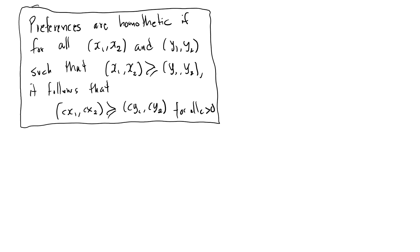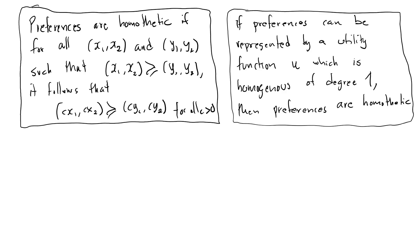This is the definition of homothetic preferences, however we tend to prefer to work with representations of preferences — utility functions — instead of preferences themselves. If preferences can be represented by a utility function, then the definition of homothetic preferences can be more easily stated in terms of the utility function. We can then show that if your preferences can be represented by a utility function which is homogeneous of degree one, then preferences must be homothetic.